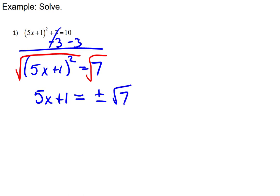The plus or minus has to be there, it's easy to forget that. But for now, we have this where we can finally get x alone by subtracting 1, that'd give us 5x = -1 ± √7. And then if we divide by 5 on both sides, we'll end up with x = (-1 ± √7)/5.